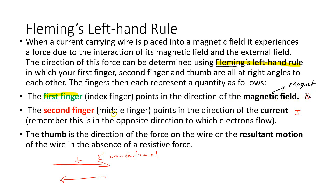The second finger, which is your middle finger, is used to show you the direction of the current. If you know the direction of the current and you know the direction of the magnetic field from the bar magnet, then you can predict the direction the wire is going to move based on the force acting on it. The thumb is used to show the direction of the force on the wire, or the resultant motion of the wire — where exactly the wire is going to move.